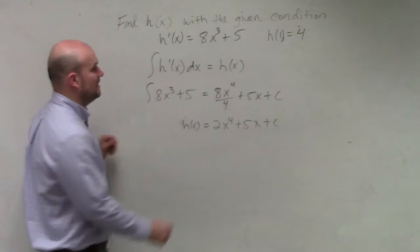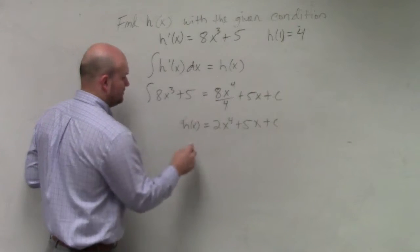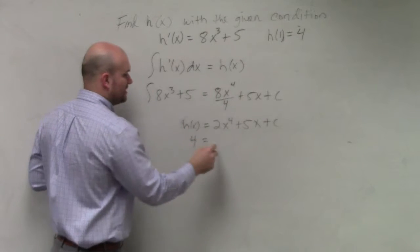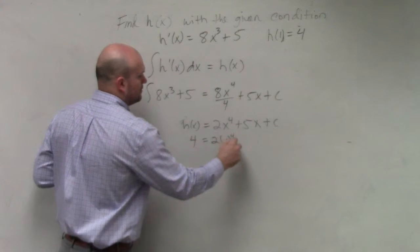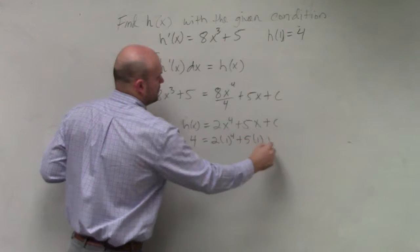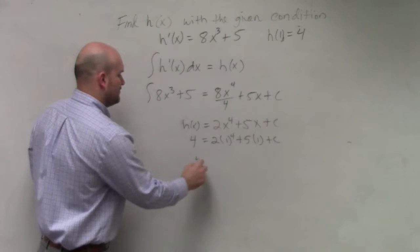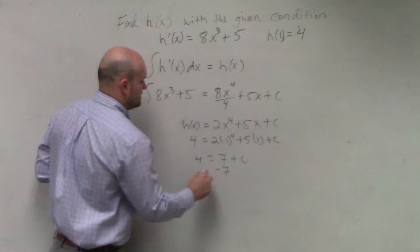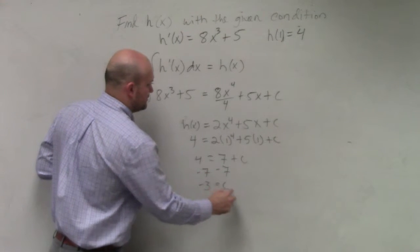Then what we could do is evaluate for h of 1. And h of 1 is equal to 4, so I'll just flip those steps. So I'll just plug in 1. So 4 equals 7 plus c, minus 7, minus 7, negative 3 equals c.